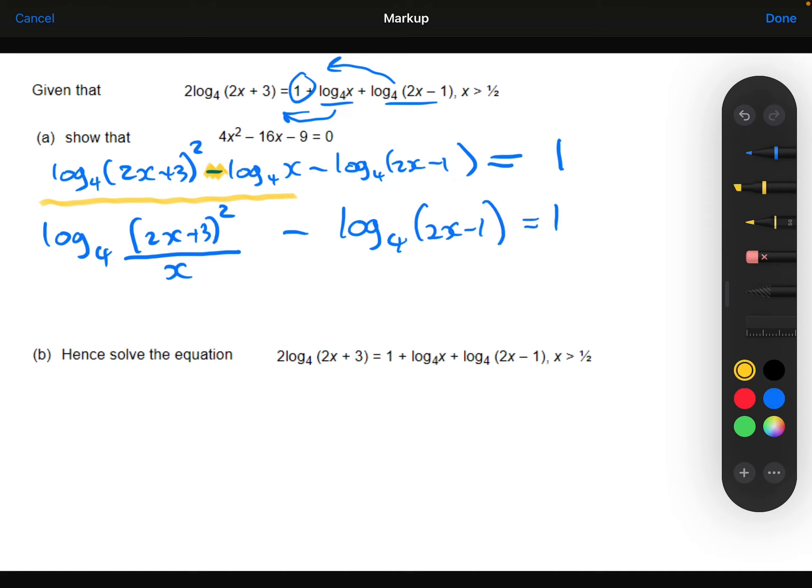And then when I use the subtraction law again, I'm then going to do all of this divided by the 2x minus 1, which is going to bring the 2x minus 1 down here. And we've now combined all of those logarithms together as a single logarithm.